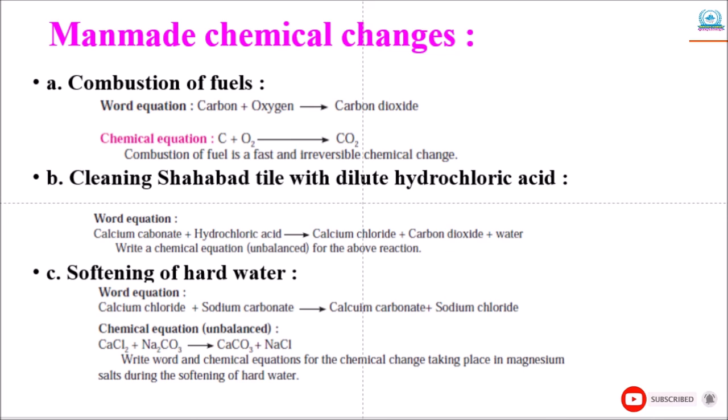The common substance that burns in all these fuels is carbon. During the combustion process, carbon combines with oxygen in air and the product carbon dioxide is formed. A common equation can be written for all combustion processes as follows: word equation is carbon plus oxygen gives carbon dioxide. Chemical equation: C plus O2 gives CO2.